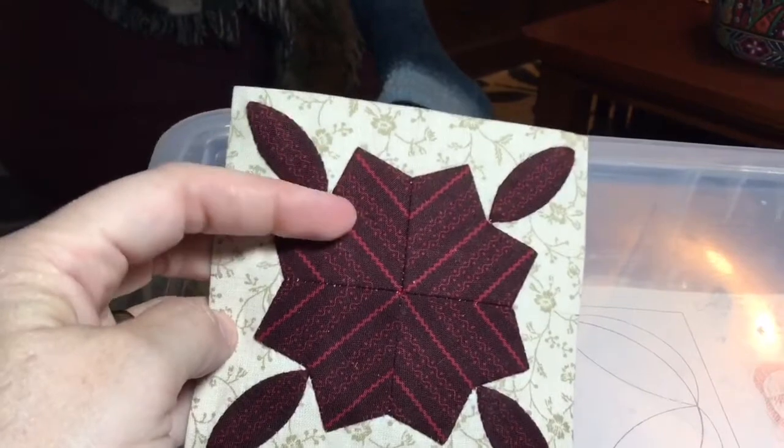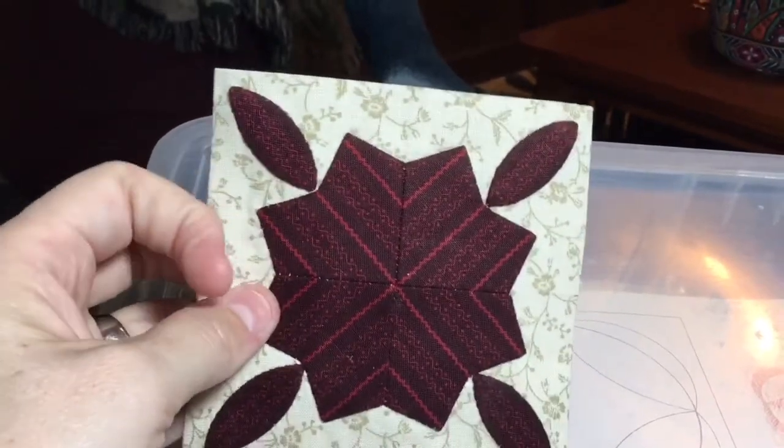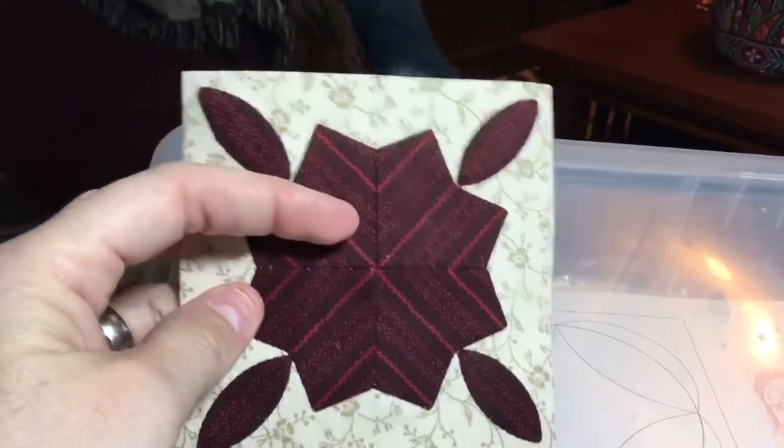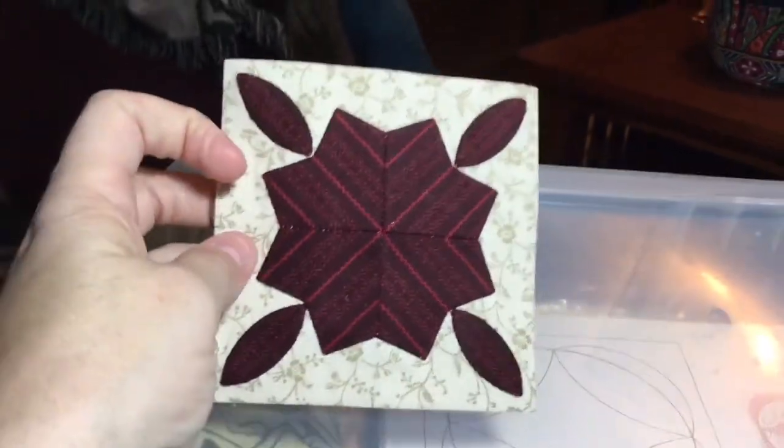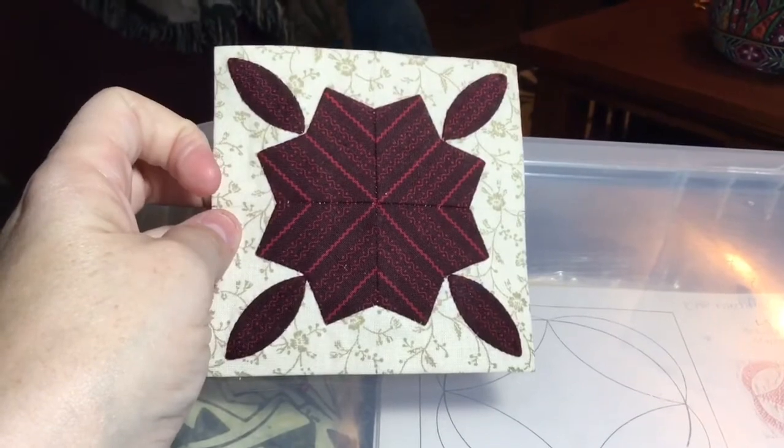So I finished all my applique around the edge of my star middle and all my little footballs. I've removed my staples very carefully and I've removed my basting, and I now have a completed I-6 block.